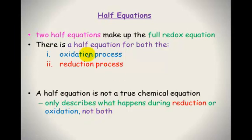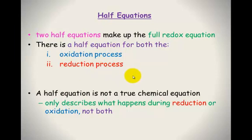One half of the half equation shows the oxidation process and the other shows the reduction process. The reason they can't exist by themselves is that oxidation — the loss of electrons — has to be able to give those electrons to another species. So it needs the reduction side of the reaction to occur, for something to uptake those electrons.